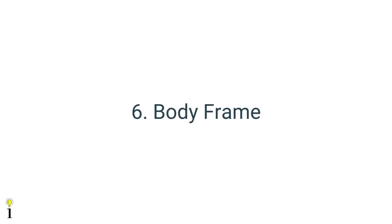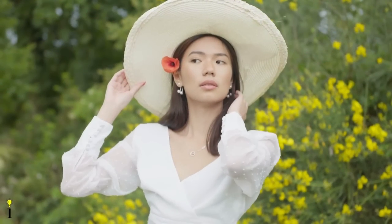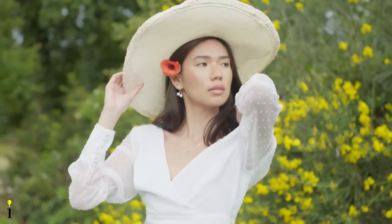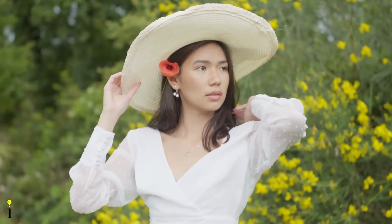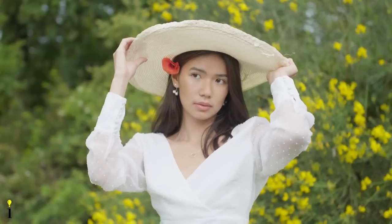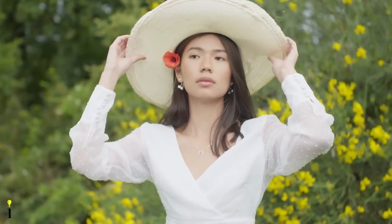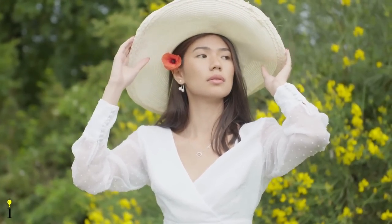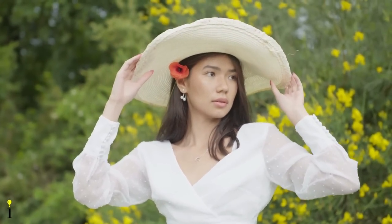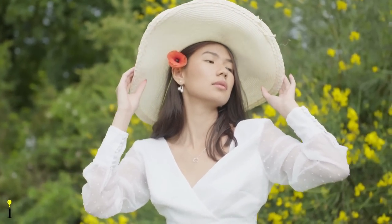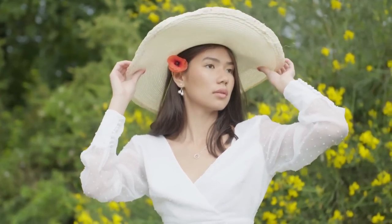The sixth is a body frame. This technique is often used in model photography. The model poses in a certain way that creates an illusion of a frame. For example, they can place their hands around their face. They can also play with their hair, clothes, and other property to frame their body.